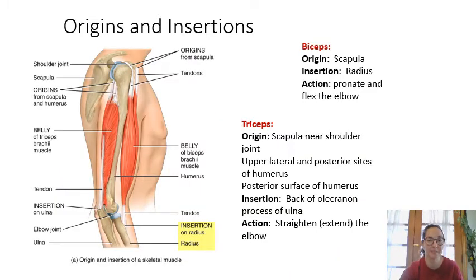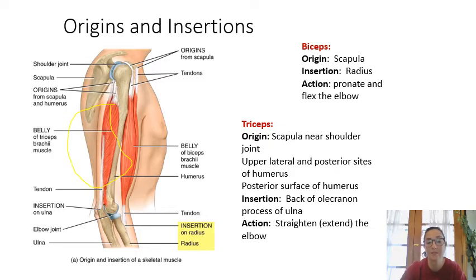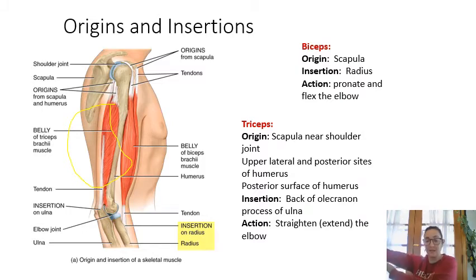The biceps has two tendons — that's why it's called biceps — so it has two origination points. It originates on the scapula, inserts on the radius, and its main action is flexion of the elbow, meaning you're closing the angle of that joint. On the posterior side of the arm, we have the triceps, which also originates on the scapula but inserts on the ulna. When the triceps contracts, it extends the arm — it straightens out the elbow. So those two muscles have opposite actions.